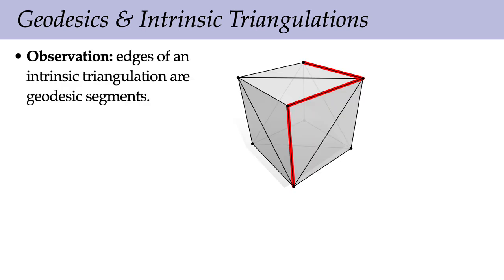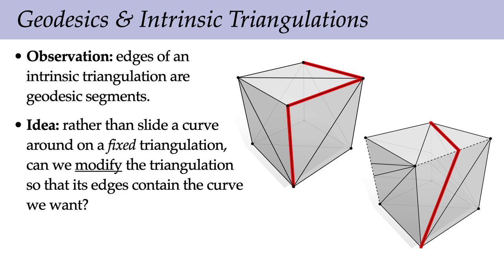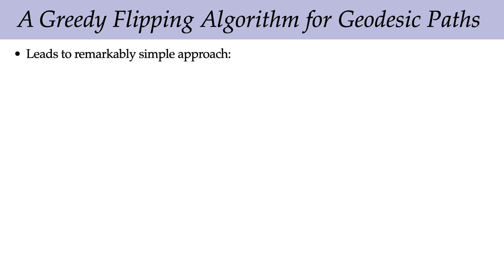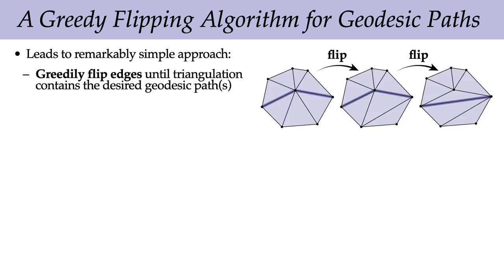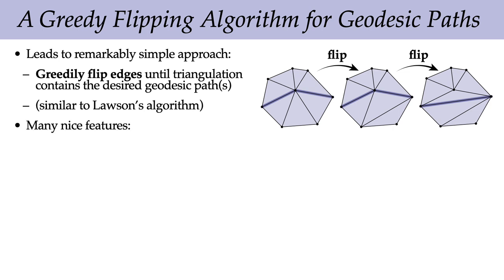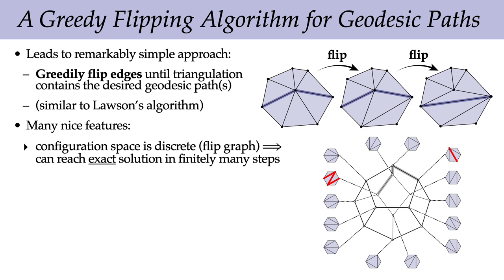Our observation is that the edges of an intrinsic triangulation are already geodesic segments. So rather than trying to slide a curve around on a fixed triangulation, why don't we modify the triangulation using edge flips so that its edges contain the final curve we want? This perspective leads to a remarkably simple algorithm where we just greedily flip edges until we have the path we want — very similar in spirit to Lawson's greedy Delaunay flipping algorithm. This approach has a lot of nice features: the configuration space of our curve is now discrete — it's just the flip graph of the triangulation — so we can reach the exact solution in finitely many steps rather than slowly converging.